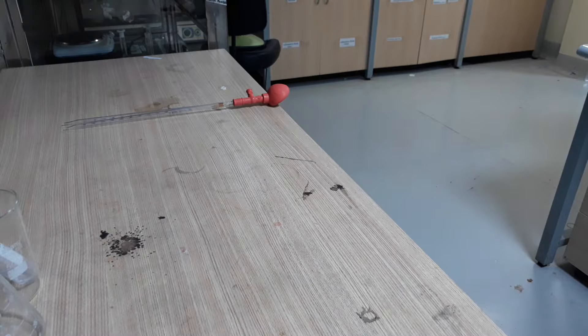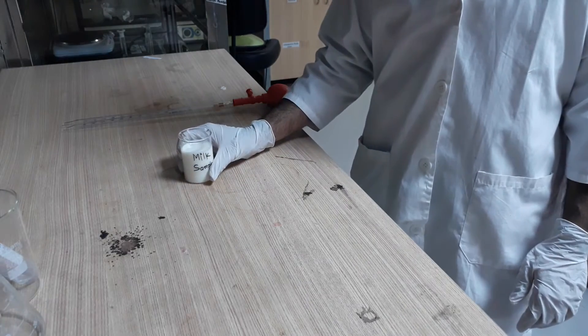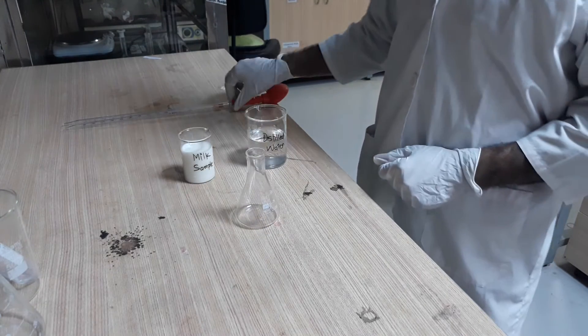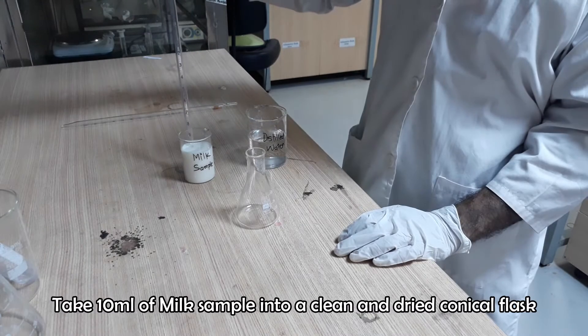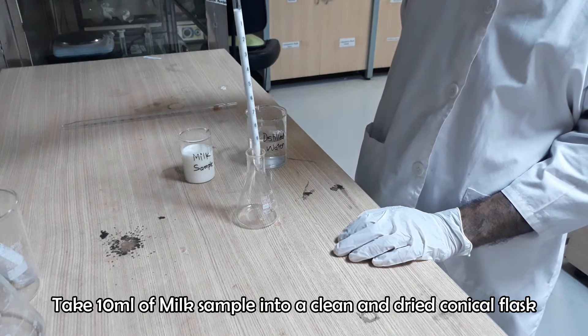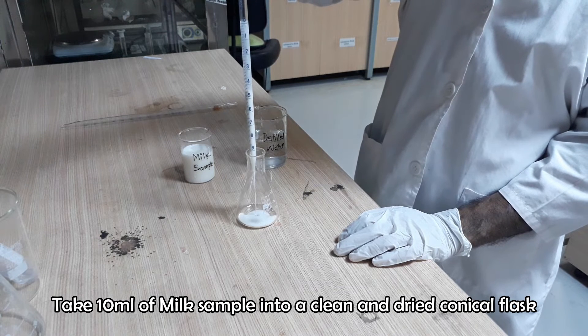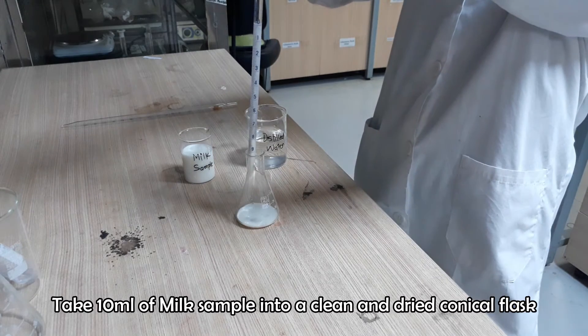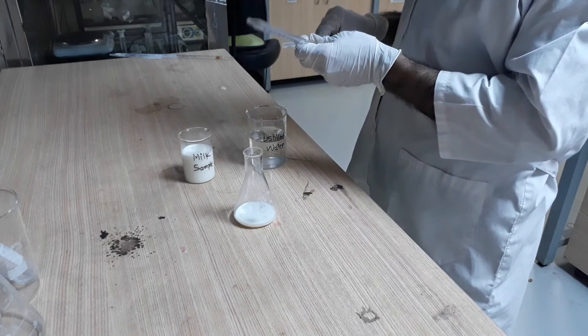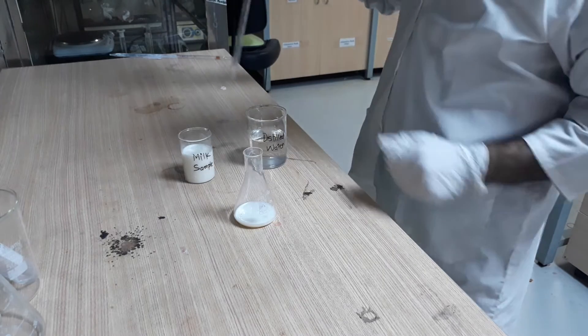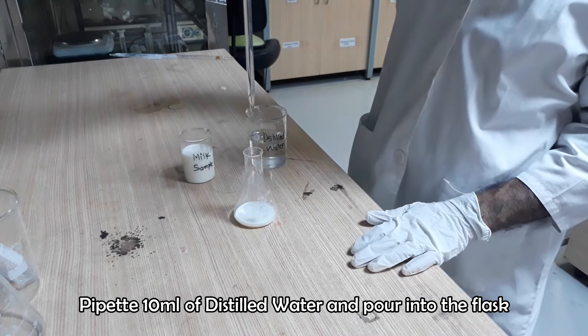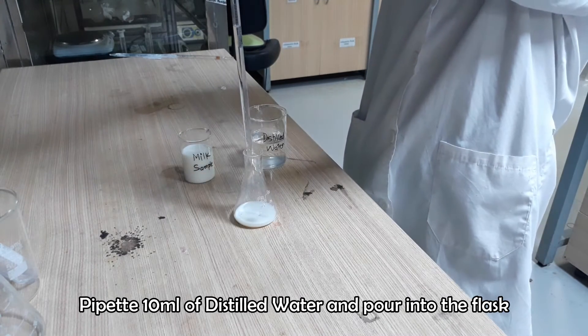Now we have to prepare our sample. Take 10 ml of milk sample in a conical flask. Add distilled water into the flask and shake it to mix the sample with water properly.